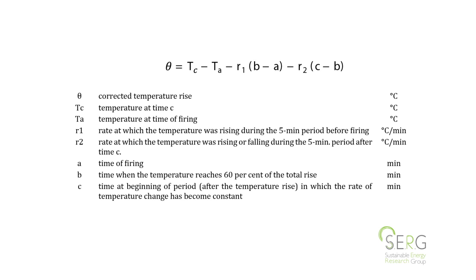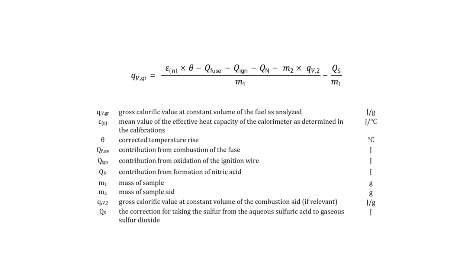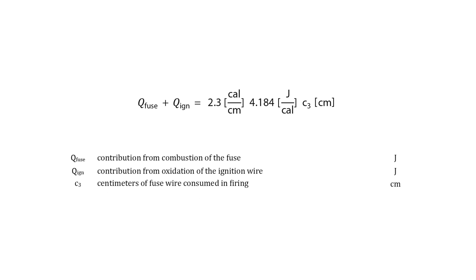Compute the net corrected temperature rise by substituting in the following equation. The derived calorific value for the biofuel is the gross calorific value at constant volume. Calculate the gross calorific value at constant volume from the individual experiment by substituting into the following equation. The contribution from the combustion of the fuse wire is given in the following equation.